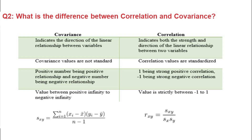We advance covariance by using correlation, which is done by standardizing it. By standardizing, apart from the direction, we also get the strength of the relationship. Correlation indicates both the strength and direction of a linear relationship between two variables. Since it is standardized, it ranges from -1 to 1. You can also explain the formula if you wish.